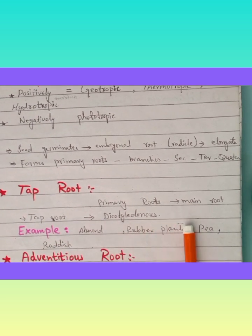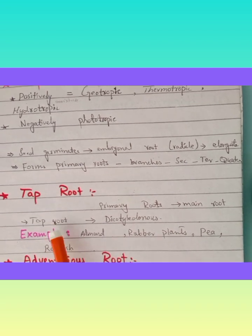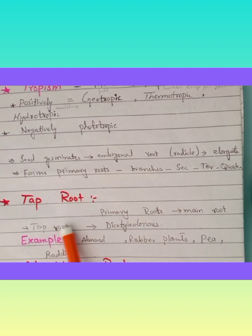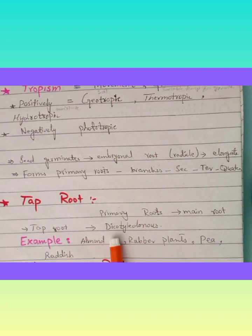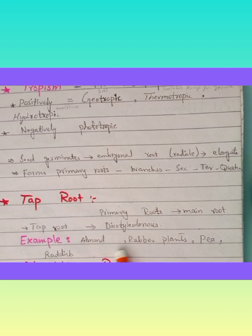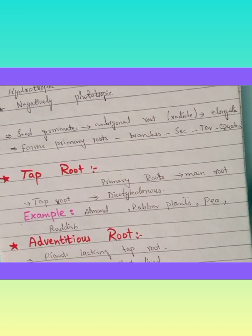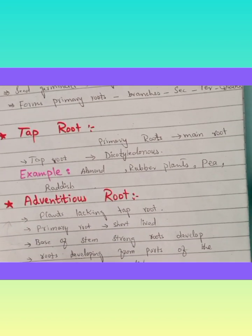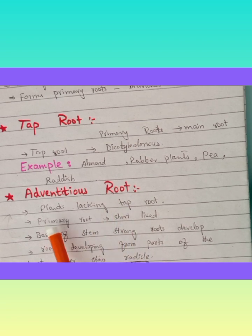Coming towards the taproot — when the primary root becomes the main root throughout the life of a plant, it is called the taproot. The taproot arises from the radicle, and this condition is seen in dicotyledonous plants. Examples include rubber plant, pea, radish, etc.